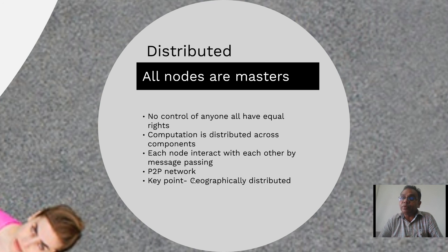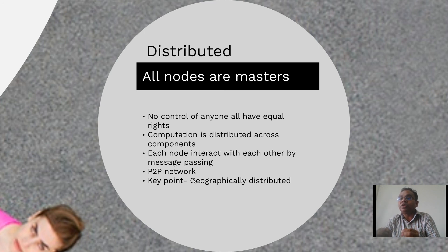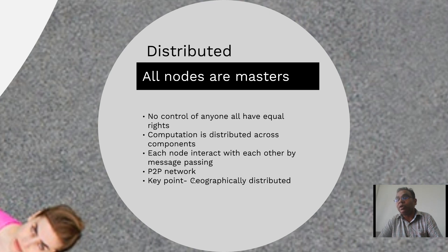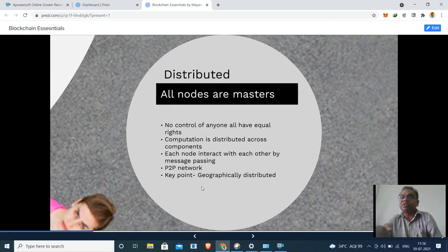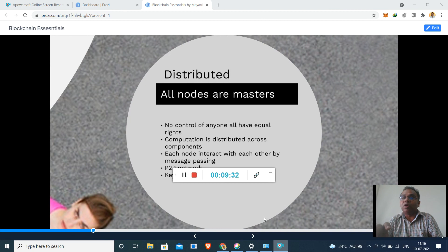To summarize: what is centralized computing, what is decentralized, and what is distributed computing should now be clear. In terms of blockchain, blockchain is a decentralized and distributed network. Depending upon the application, we can use features of decentralized or distributed computing — but at the back end, blockchain is a decentralized distributed network. In the next session we will be focusing on the different types of blockchain platforms.